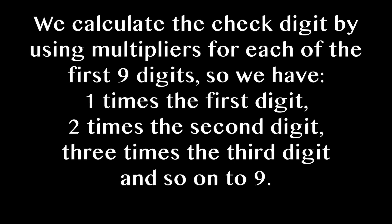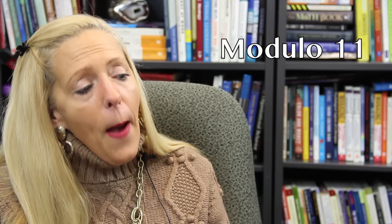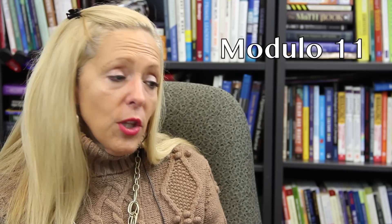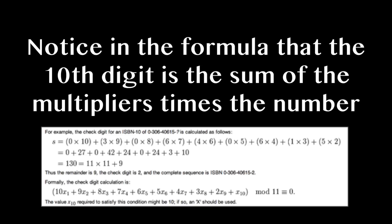The check digit that checks to make sure you have the right number is the 10th digit — we call this the check digit. We calculate the check digit by using multipliers for each of the first 9 digits: 1 times the 1st digit, 2 times the 2nd, 3 times the 3rd digit, and so on all the way to 9. We are using Modulo 11, so it looks like this. Notice in the formula that the 10th digit is the sum of the multipliers times the number, and then that is in Modulo 11.